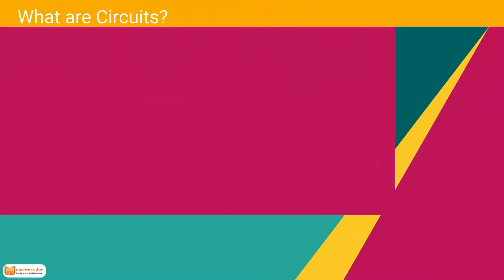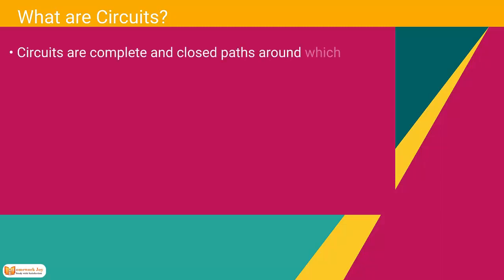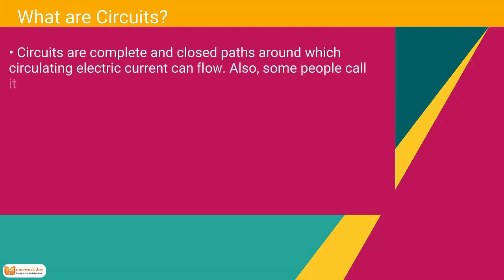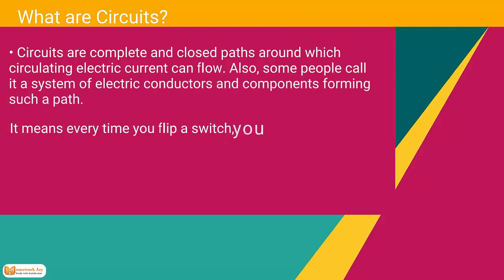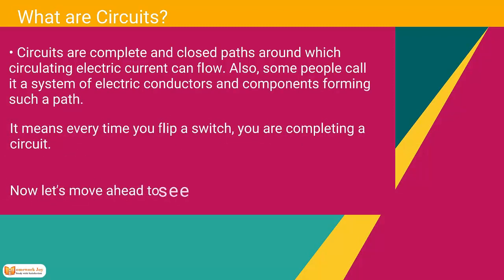What are circuits? Circuits are complete and closed paths around which circulating electric current can flow. Some people also call it a system of electric conductors forming such a path. It means every time you flip a switch, you are completing a circuit.